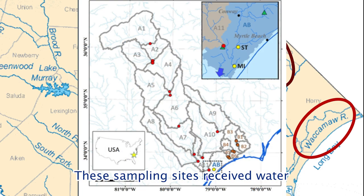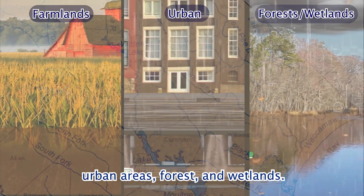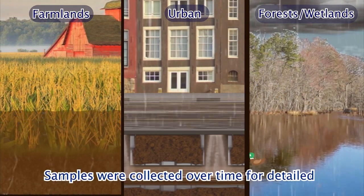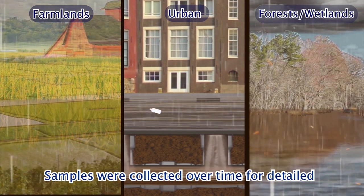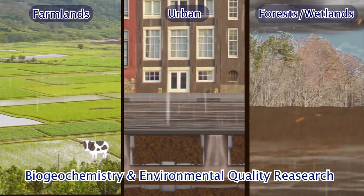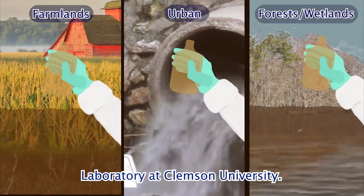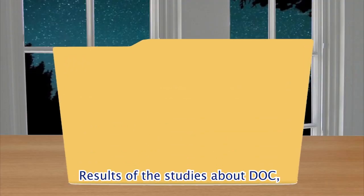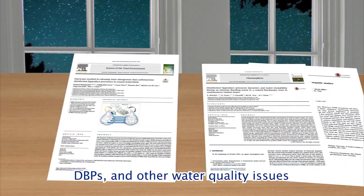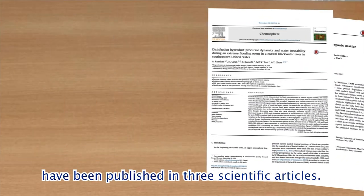These sampling sites received water from different landscapes, including farmlands, urban areas, forests, and wetlands. Samples were collected over time for detailed chemical analysis in the biogeochemistry and environmental quality research laboratory at Clemson University. Results of the studies about DOC, DBPs, and other water quality issues have been published in three scientific articles.